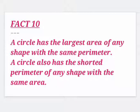Do you know a circle has the largest area of any shape with the same perimeter and also a circle has the shorter perimeter of any shape with the same area. How fascinating is this?